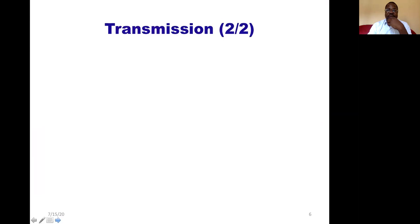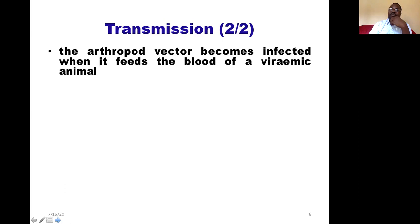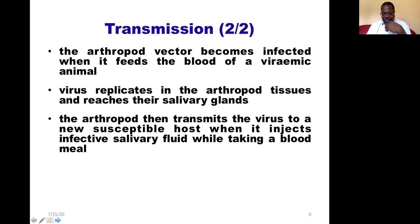How does the transmission happen? First, the arthropod vector becomes infected when it feeds on the blood of an infected animal. So you have an infected animal that becomes viraemic, then either a sandfly, mosquito, or tick will come to bite that animal. The virus then replicates in the tissue of the arthropod and moves until it reaches the salivary gland. Finally, the arthropod transmits the virus to a new susceptible host — in this case a human — when it injects that infective salivary fluid while taking a blood meal.